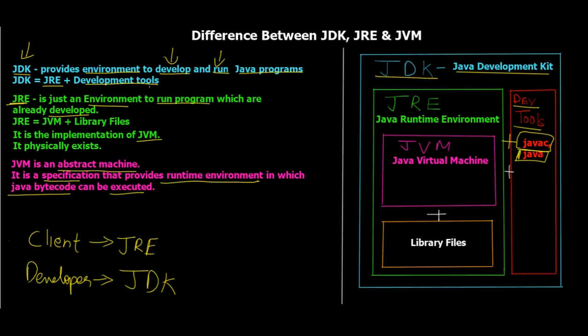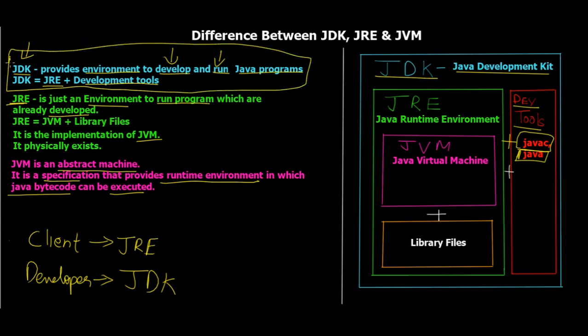So this is the entire structure: JDK is at the top, JDK equals JRE plus development tools, and JRE equals JVM plus library files. We as developers will directly download and use the JDK, and in upcoming tutorials I'll show you where to download it. Programs run in the JRE, which is the implementation of JVM. JVM, JRE, and JDK are different for every system — for Windows it is different, for Linux it is different.